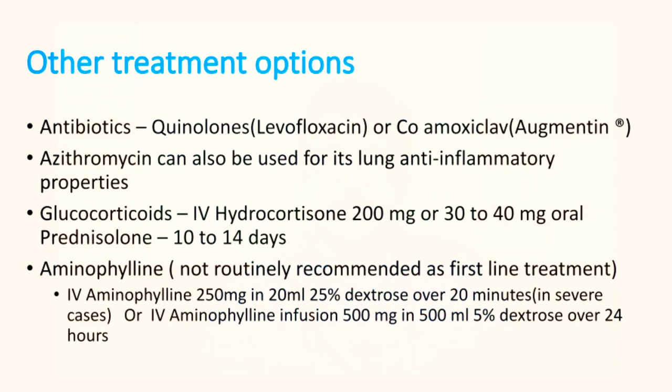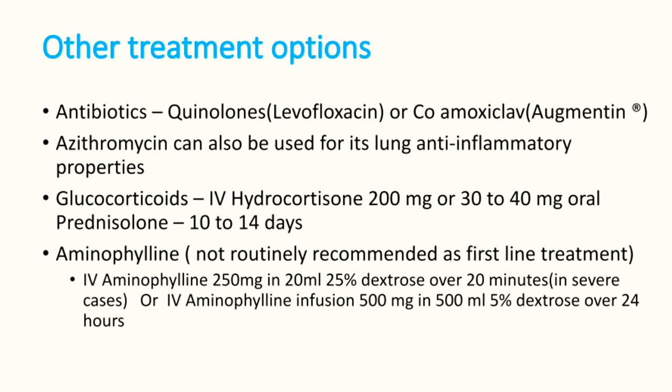Magnesium sulfate 3g IV infusion can help prevent further exacerbations. Antibiotics should be given in all patients with exacerbation — for community-acquired infections, give levofloxacin 500–750mg IV once daily; for hospital-acquired infections, use higher drugs like cefoperazone-sulbactam or piperacillin-tazobactam. Azithromycin 250mg on alternate days for six months uses its anti-inflammatory properties for chronic lung inflammation.